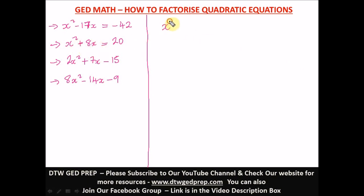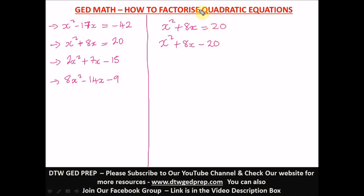Next question: x-squared plus 8x equals 20. We subtract 20 from both sides — taking a positive 20 to the other side makes it negative. So we have x-squared plus 8x minus 20 equals zero. Now what are the factors of 20?